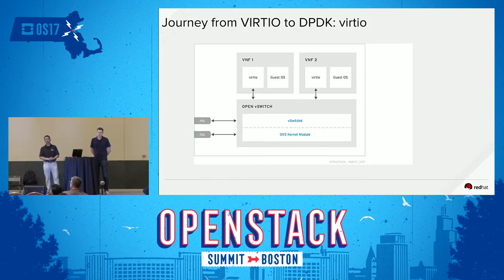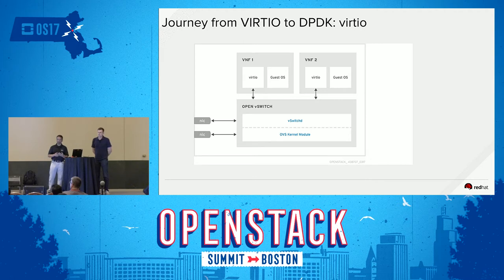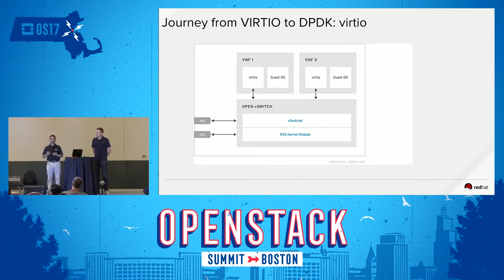Now let's talk about the journey from virtio all the way to DPDK — how we got here. When people started thinking about NFV, initially it was all virtio, and performance was considerably low. You could easily get maybe 600 to 800 Mbps out of a 10-gig link, which is just not acceptable from an NFV telco point of view. That's what it looks like when you have two 10-gig NICs in this scenario.